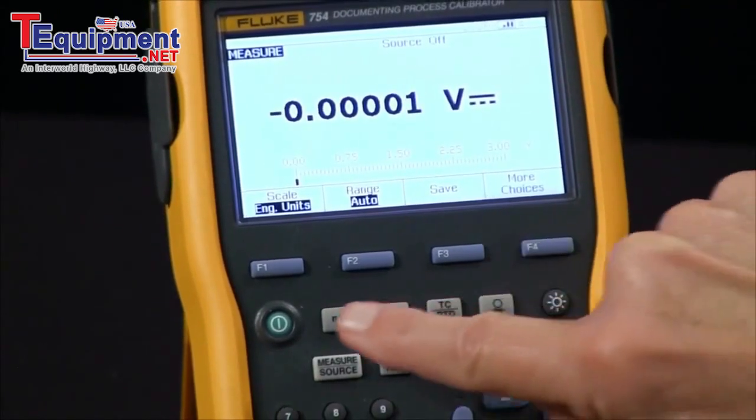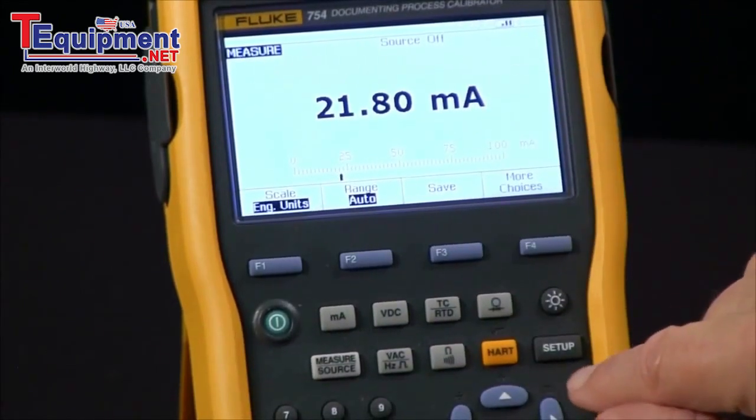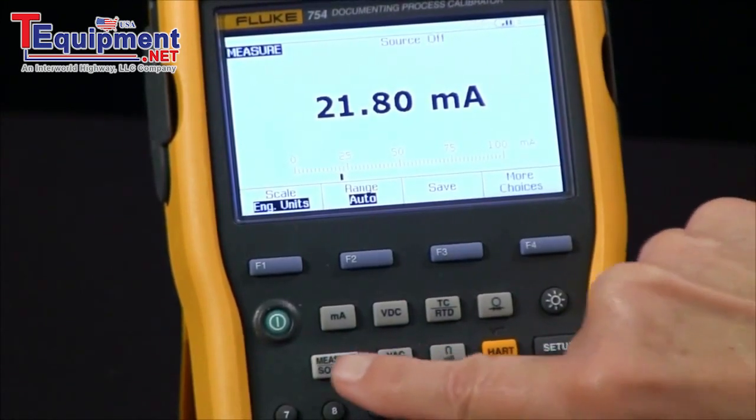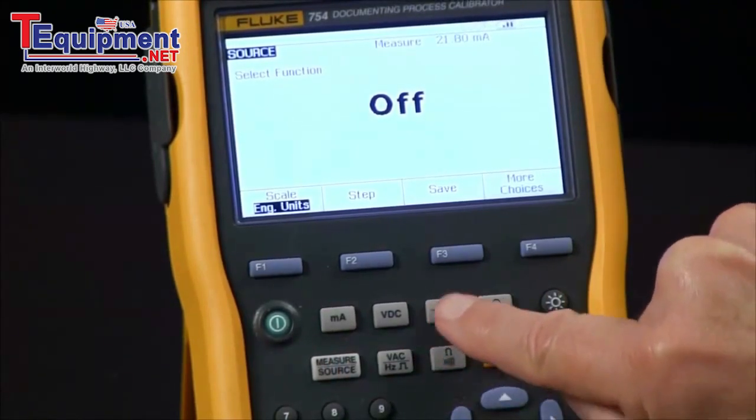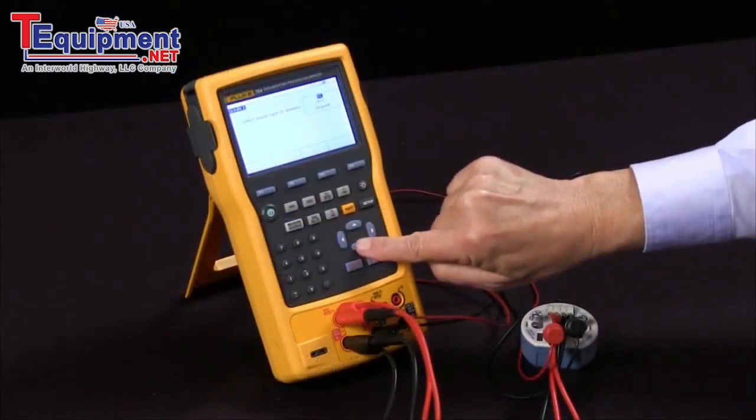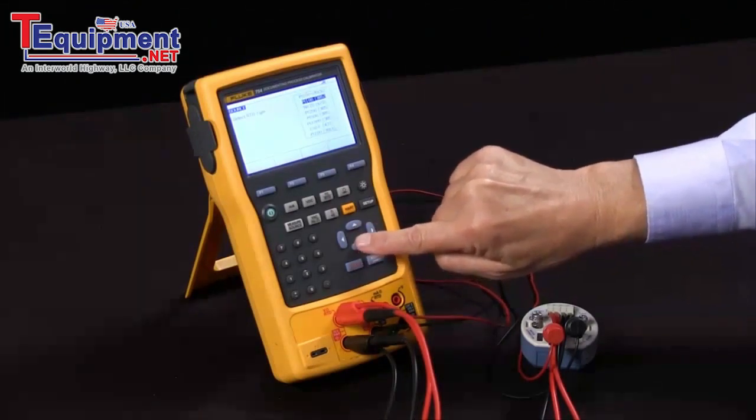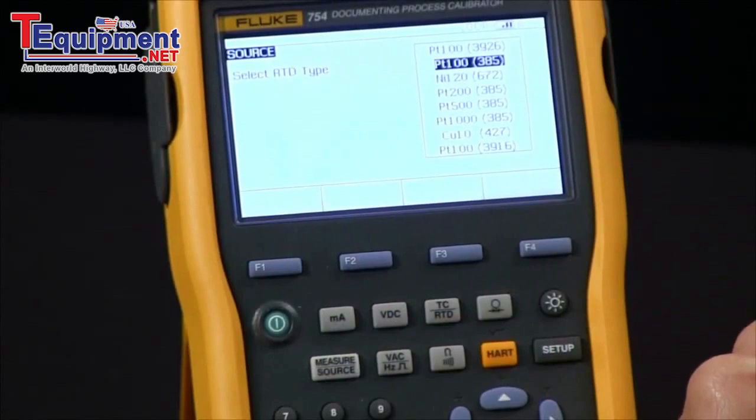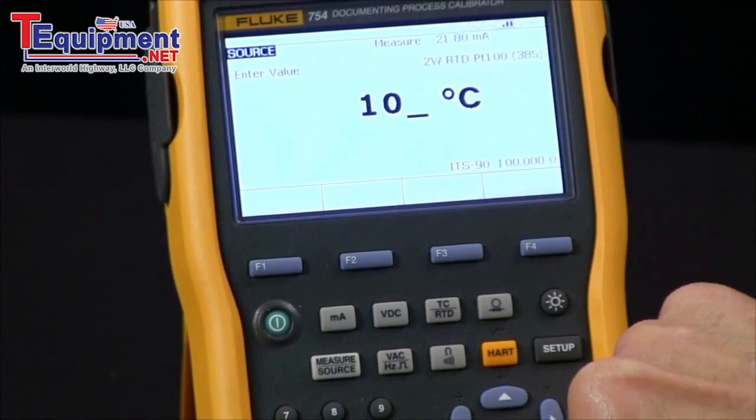If I go to milliamps measure, it's measuring 21.8 milliamps. If I go to source measure source and I select RTD, it asks me what type of RTD - platinum 100 ohm 385 - and it asks me to put in a temperature, so I'm going to put in 100 degrees.